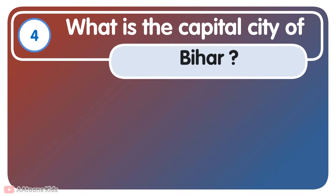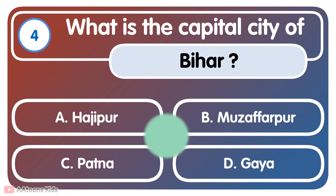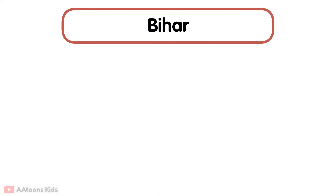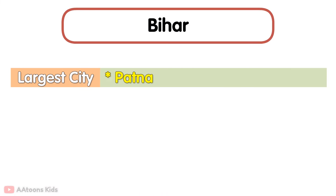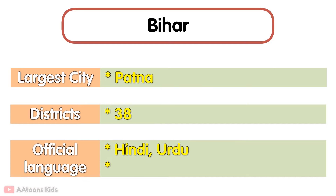What is the capital city of Bihar? Patna. Patna is the capital city of Bihar. The largest city in Bihar is Patna. It has 38 districts. The official languages are Hindi and Urdu. Bihar is famous for being the center of two important religions, Buddhism and Jainism.